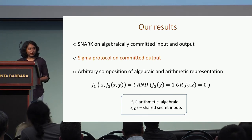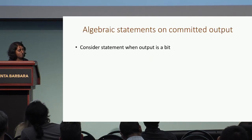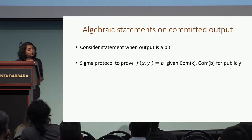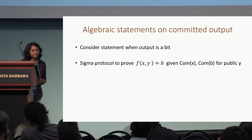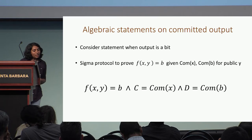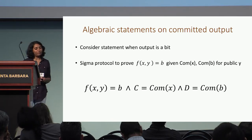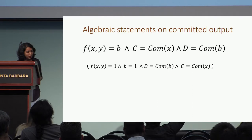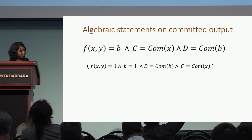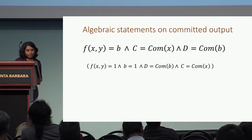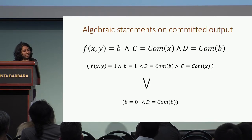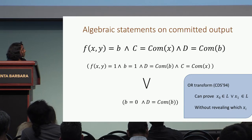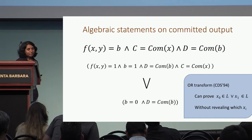I'll now talk about our sigma protocol constructions on committed output. I'll begin with the simple situation where our algebraic function has a one-bit output: f(x, y) = b, where x is a secret value, b is a bit, and y is public. The statement to prove is f(x,y) = b, where c is a public commitment to x and d is a public commitment to b. Using the sigma protocol for f, we prove that f(x,y) = 1 and the commitment inside d is 1, or f(x,y) = 0 and the commitment inside d is 0, using the standard sigma protocol OR transform that proves either x_0 is in L or x_1 is in L without revealing which.